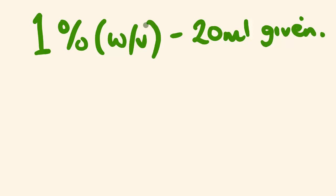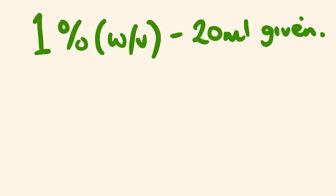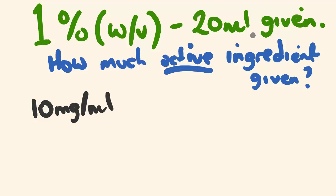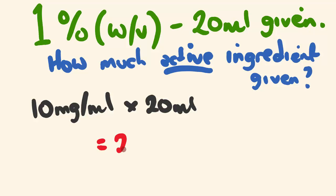Say we had dextrose at 1% W/V, and 20 mils of this solution is given — how much of the active ingredient is given? The first thing I do is change this into milligrams per mil: 1% W/V times 10 gives 10 milligrams per mil. And 20 mils is given, so there are 10 milligrams for every mil. Times 10 milligrams per mil by 20 mils, and it tells us that 200 milligrams of active ingredient is given.